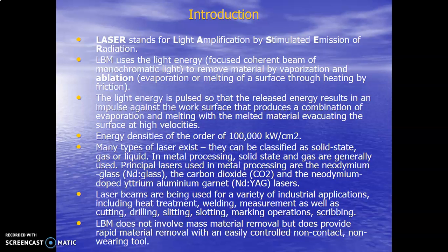The lasers used in metal processing are: first, glass; second, carbon dioxide; and third, Nd:YAG — Neodymium Yttrium Aluminum Garnet. These are commonly used. The name YAG is somewhat complicated but you have to remember these three types. Laser beams are used for a variety of industrial applications including heat treatment, welding, measurement, cutting, trailing, slitting, slotting, marking operations, and scrubbing. Laser beam machining has a wider range of applications compared to other non-conventional machining processes.